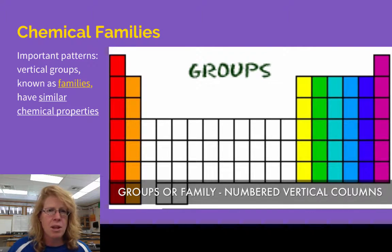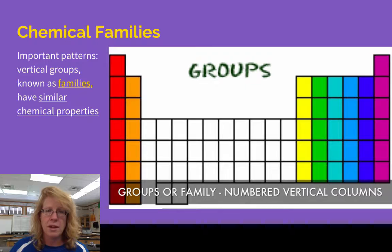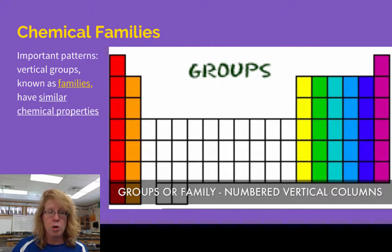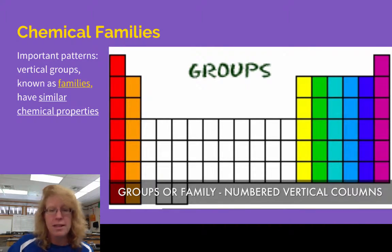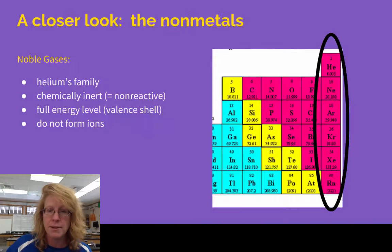This is something where you may want to get a periodic table of your own, color it in, label it, something along those lines. Vertical groups are known as families, and families are characterized by having very similar chemical properties — they have similar reactivities.